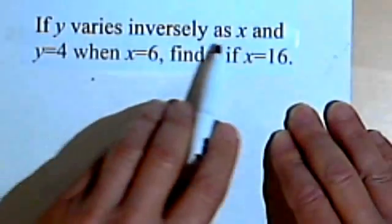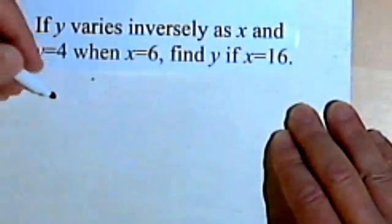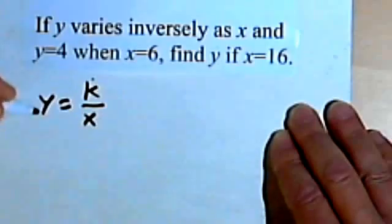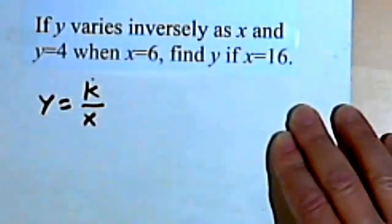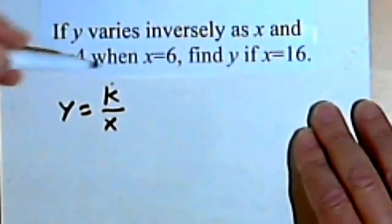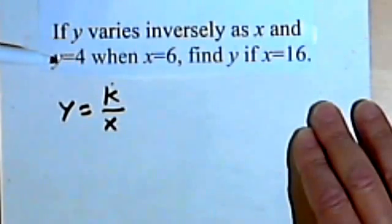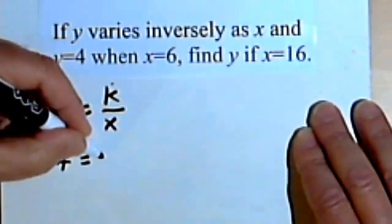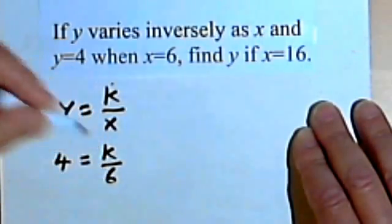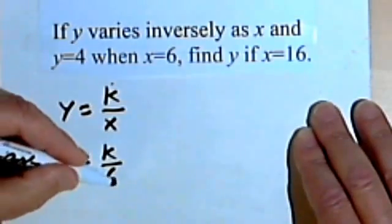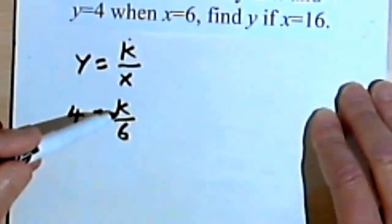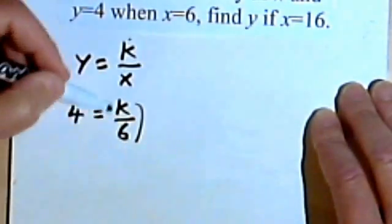If y varies inversely as x, this part of the problem tells me I've got inverse variation. So I'll write my formula, y equals k over x. Then it says y equals 4 when x equals 6. So that's my clue to plug in the x and the y that they're giving me. So y equals 4 when x equals 6. And now I want to solve for k. So I'll just multiply both sides by 6.